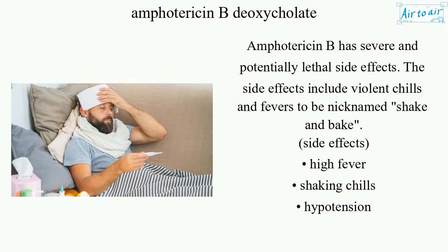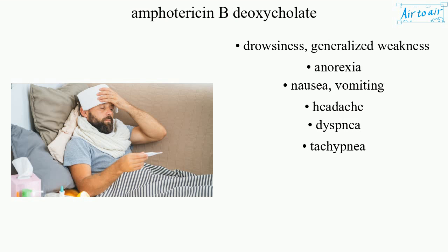Amphotericin B has severe and potentially lethal side effects. The side effects include violent chills and fevers, earning it the nickname 'shake and bake.' Side effects include: high fever, shaking chills, hypotension, drowsiness, generalized weakness, anorexia, nausea, vomiting, headache, dyspnea, and tachypnea.